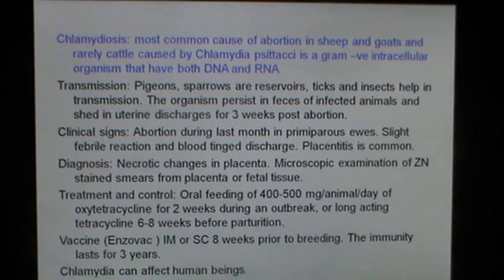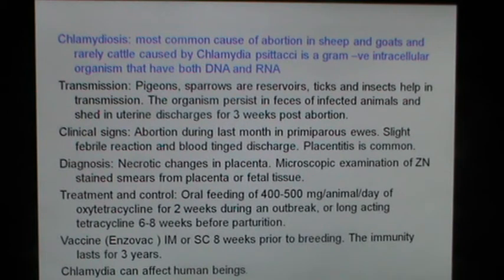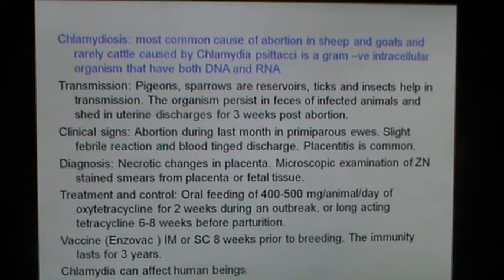Chlamydiosis is the most common cause of abortion in sheep and goats and rarely cattle, caused by Chlamydia psittaci, a gram-negative intracellular organism which has both DNA and RNA. Transmission is through pigeons, sparrows as reservoirs, and ticks and insects help in transmission. The organism persists in feces of infected animals and is shed in uterine discharges for 3 weeks post-abortion. Clinical signs include abortion during the last month in primiparous ewes, slight febrile reaction and blood-tinged discharge. Placentitis is common. Diagnosis involves observation of necrotic changes in the placenta, and microscopic examination of Gene Nelson's stain smears from placenta or fetal tissue. A vaccine, Enzovax, administered intramuscular or subcutaneous 8 weeks prior to breeding in sheep, is suggested. Immunity lasts 3 years. Chlamydia can affect human beings, so caution is advised.